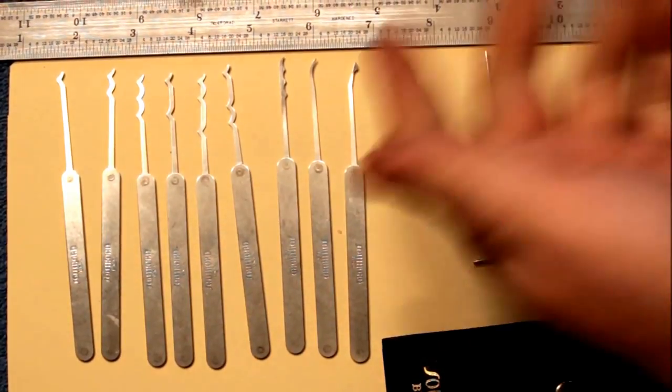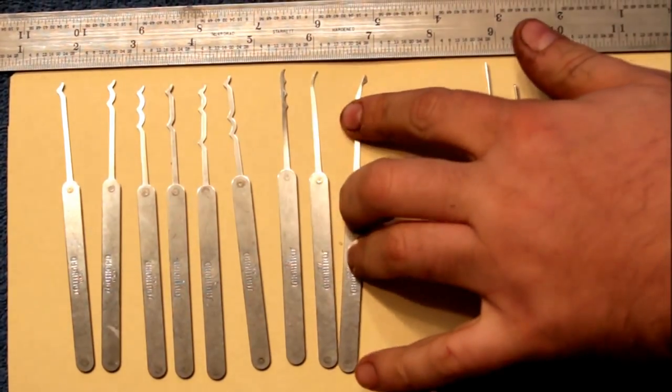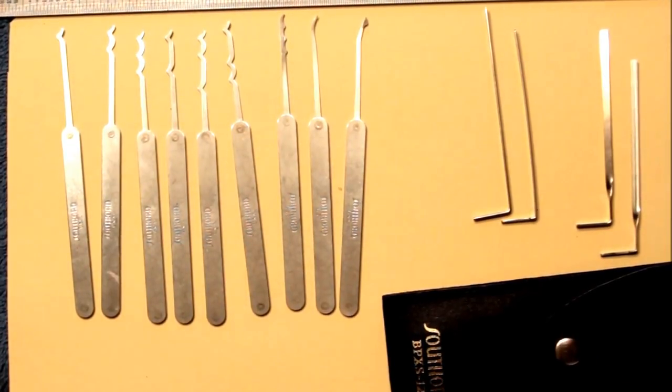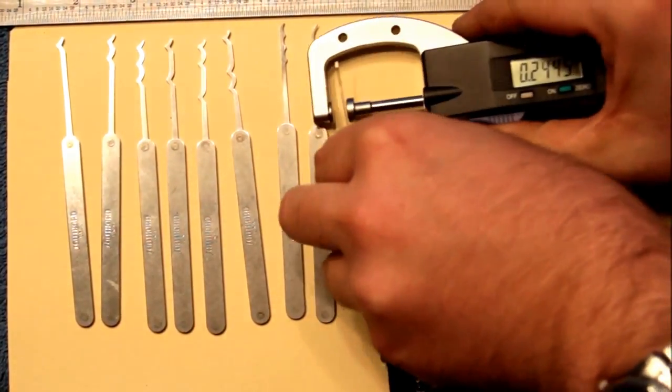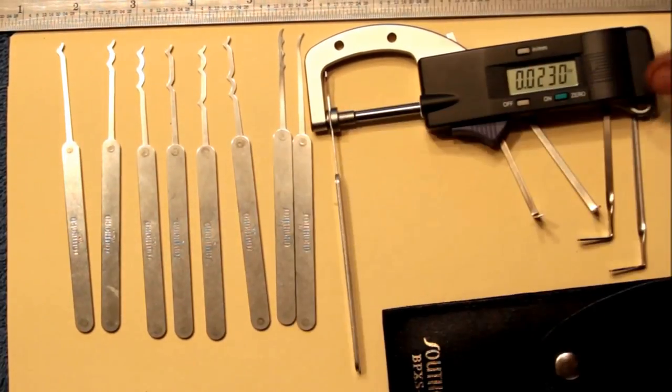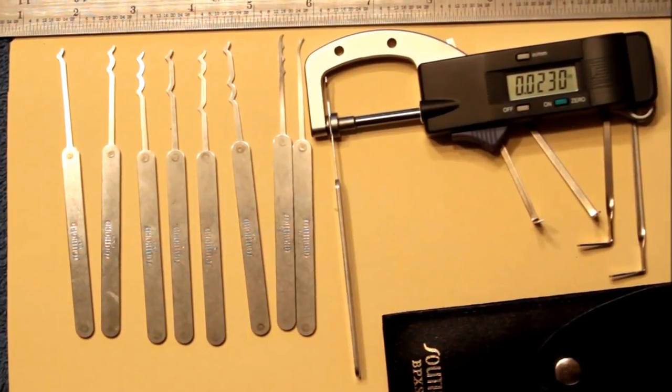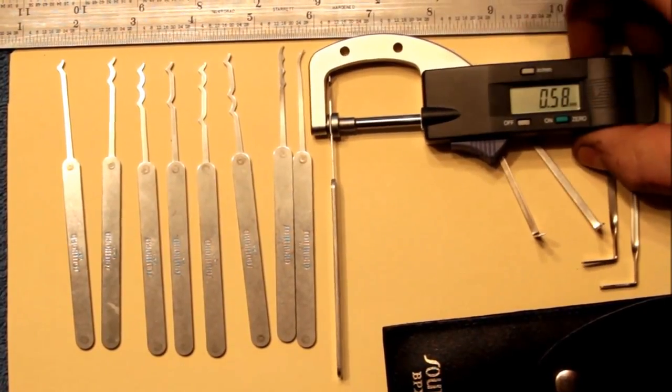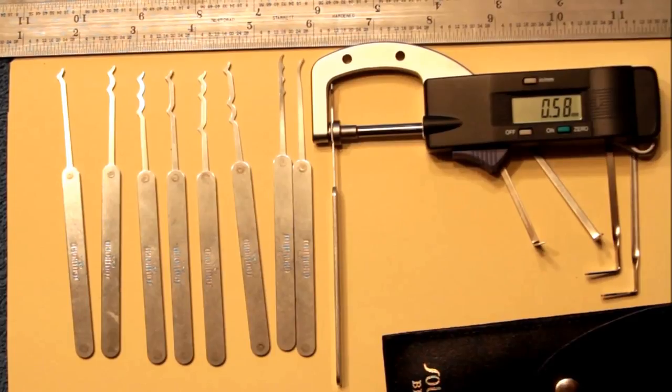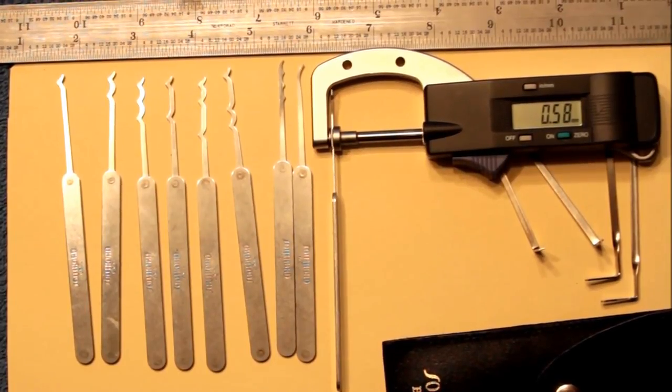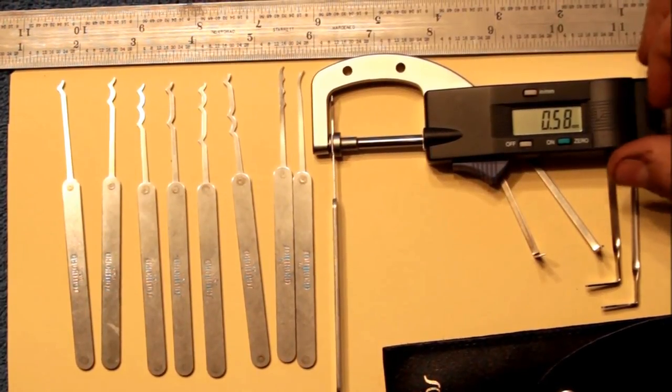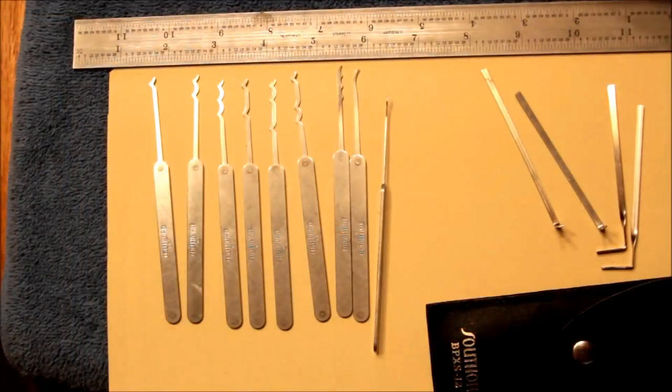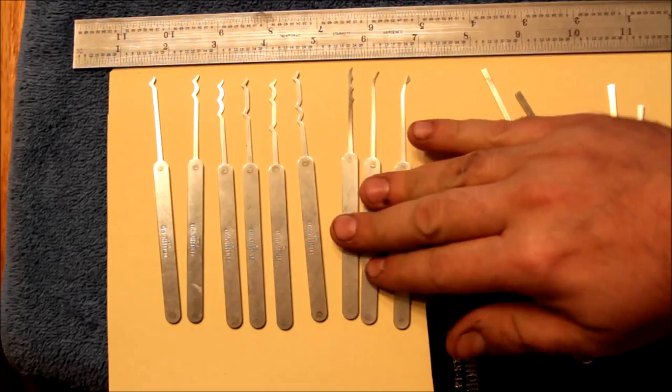So they're pretty standard Southord construction. The metal is .023 inches, or for those of you in metric speaking countries, 0.58 millimeters to almost .6. Pretty standard thickness. It seems like a pretty good thickness. They get in most keyways pretty well.